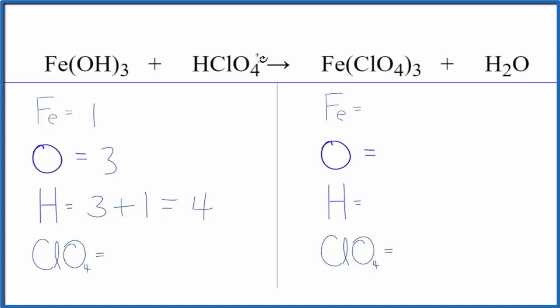And here's the trick. This perchlorate ion, we have one here and then we have some here. So this stays together in the reaction. So we're just going to count this as one thing. That's going to make it a lot easier to balance. You can use this on double displacement and other neutralization reactions. So we have one perchlorate.